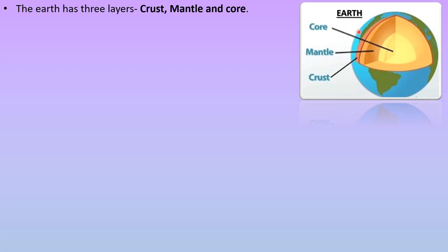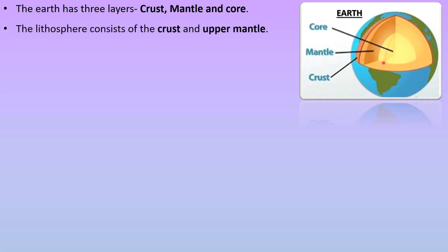The Earth has three layers. The crust is the outermost layer of the Earth — the blue and green color comprises the crust. Below the crust there is the mantle, which is divided into the upper mantle and lower mantle. The inner layer of the Earth is known as the core. The lithosphere consists of the crust and the upper mantle, and the crust is the uppermost layer of the lithosphere.